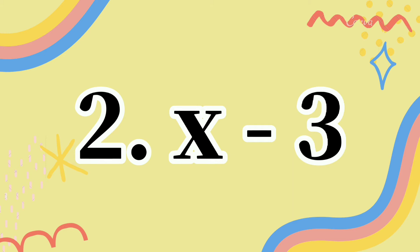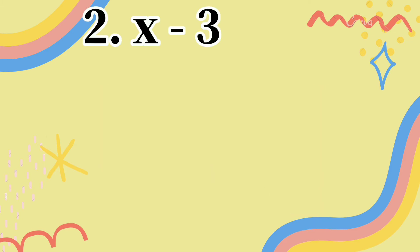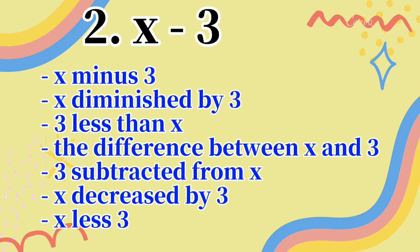Next, let's have number 2. The symbol is a hyphen or dash, which indicates subtraction. We can translate it as: x minus 3, x diminished by 3, 3 less than x, the difference between x and 3, 3 subtracted from x, x decreased by 3, or x less 3. We have many keywords for subtraction and can use any of them.